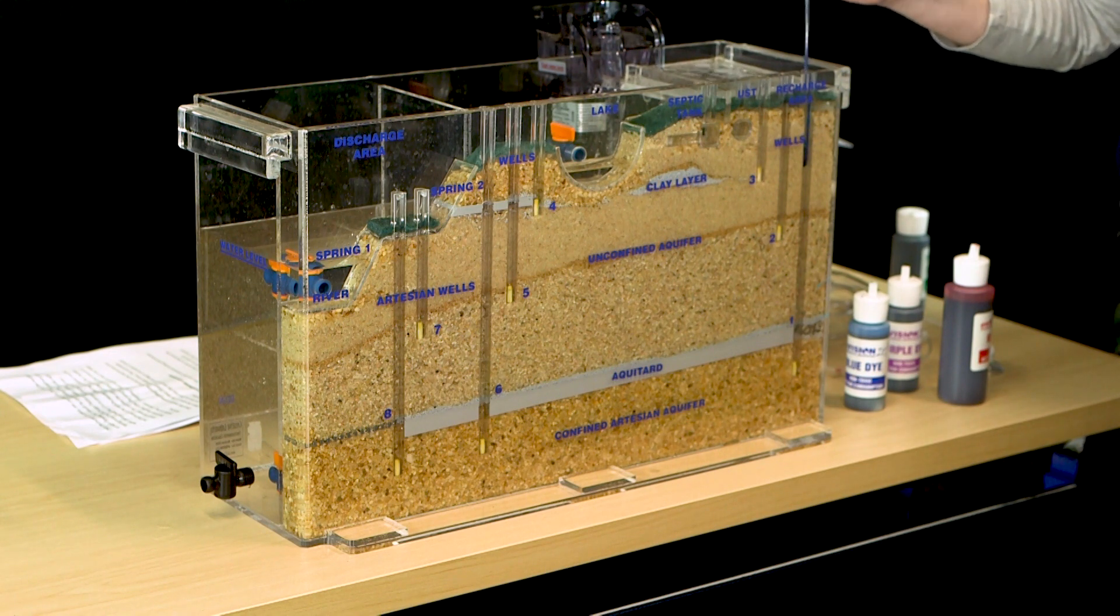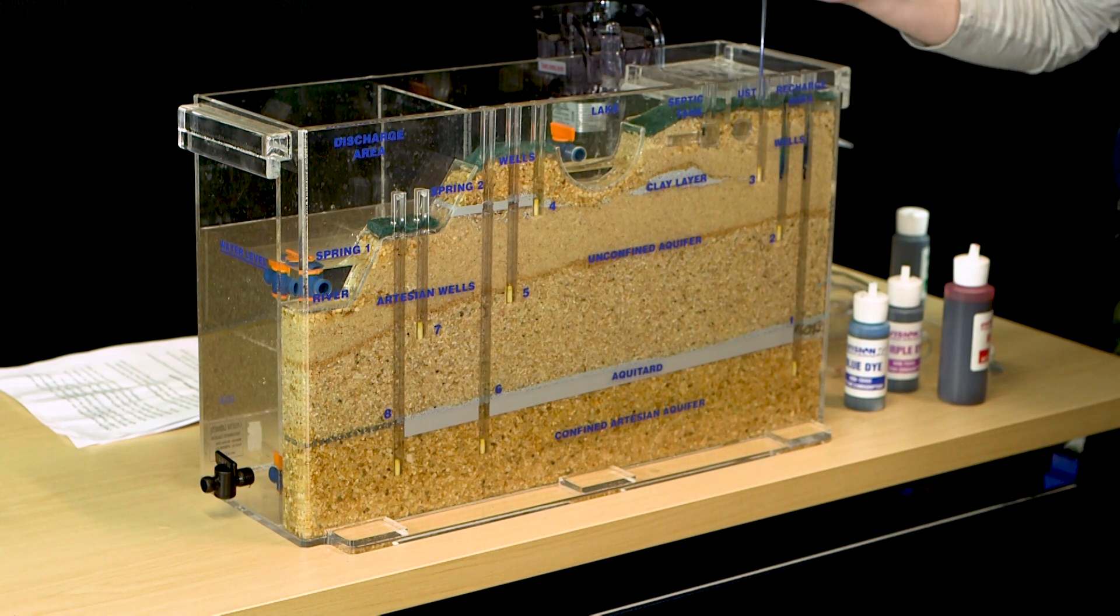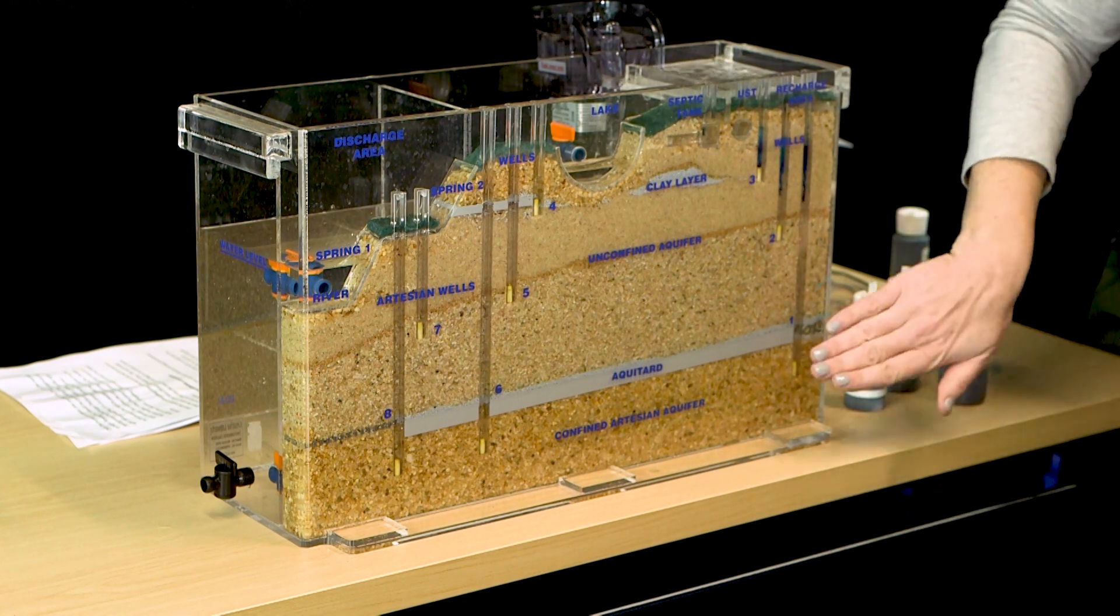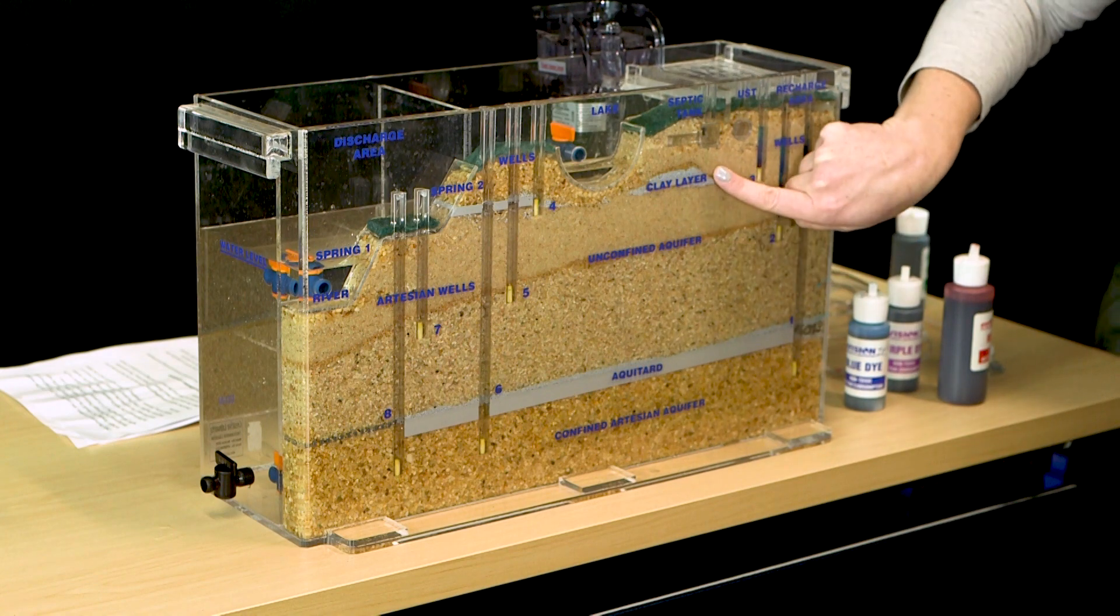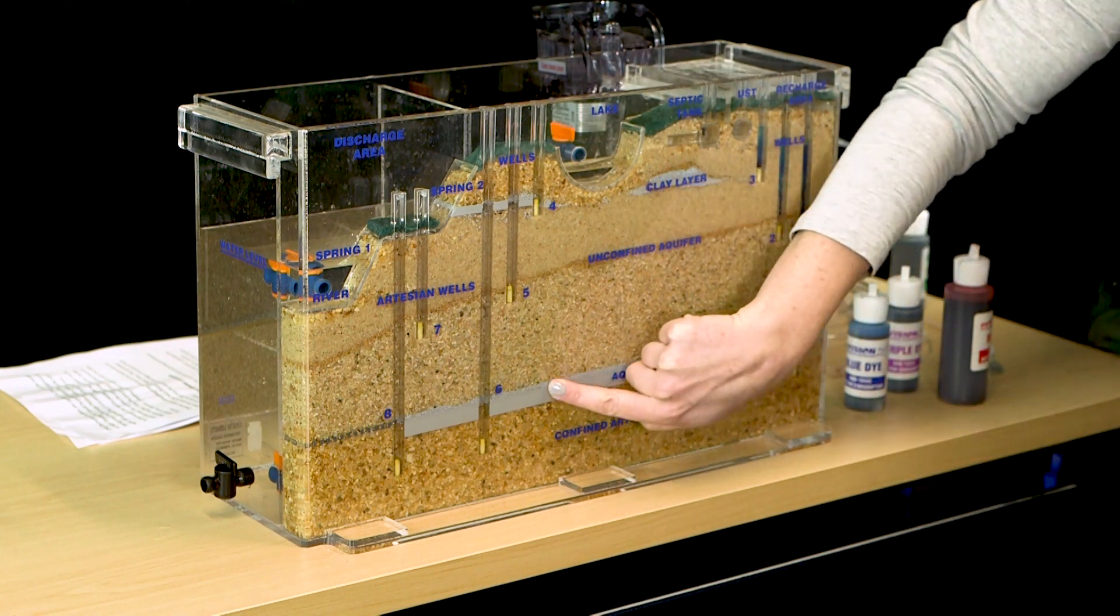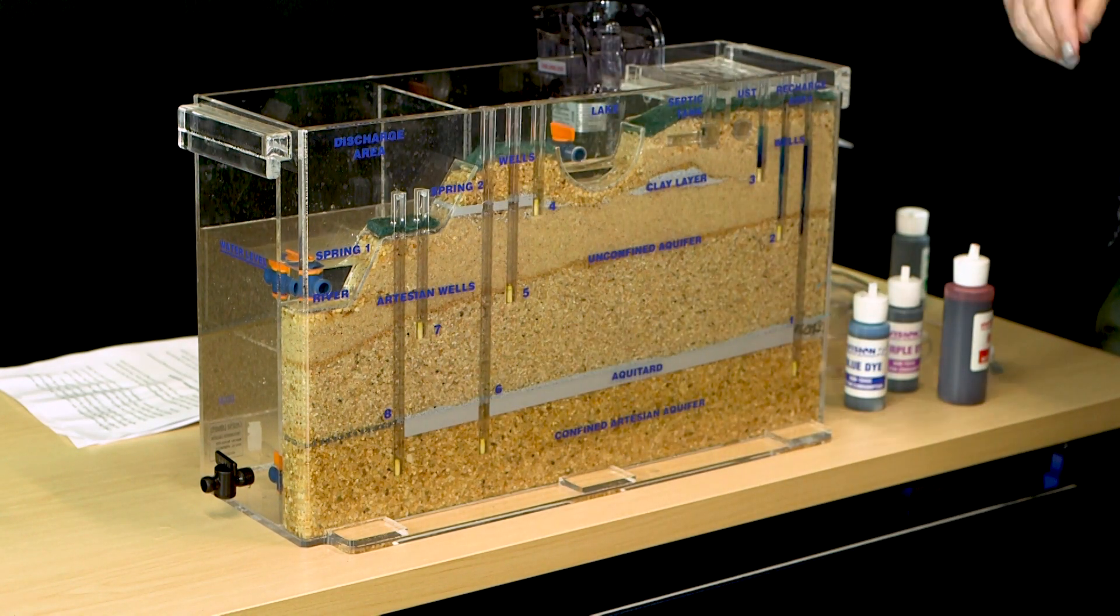Start by injecting a few drops of blue dye into the wells to illustrate the water table. You can also use the labels on the model to identify confined and unconfined aquifers as well as various layers that might impede groundwater flow.